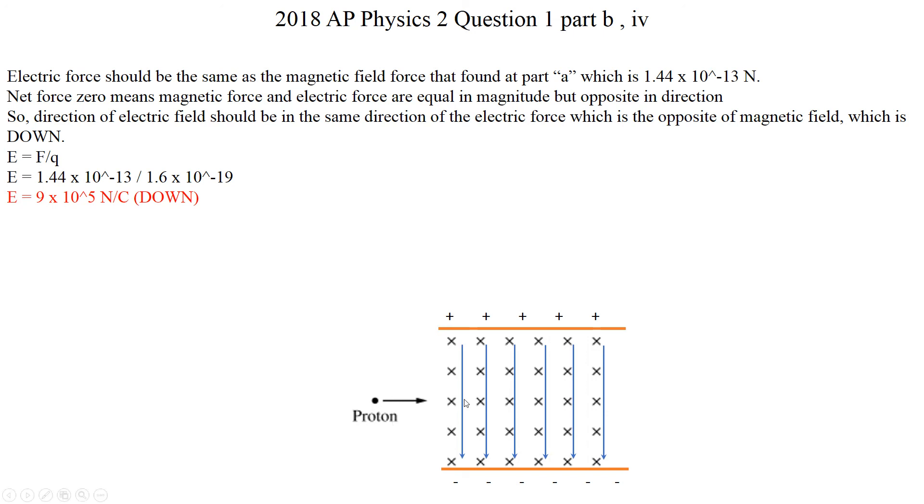In this case, we knew that magnetic force is going up. So for this guy to be able to go straight, electric force must be acting downward. So for electric force to act downward, then you need to have two parallel plates.